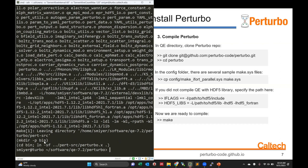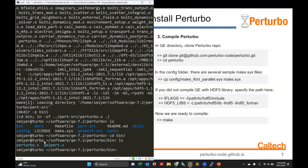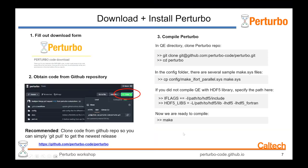After the compilation finishes, we change to the bin folder. We can see there are two executables: Perturbo.x and QE2Pert.x. So it works. That basically summarizes how to download and install Perturbo.